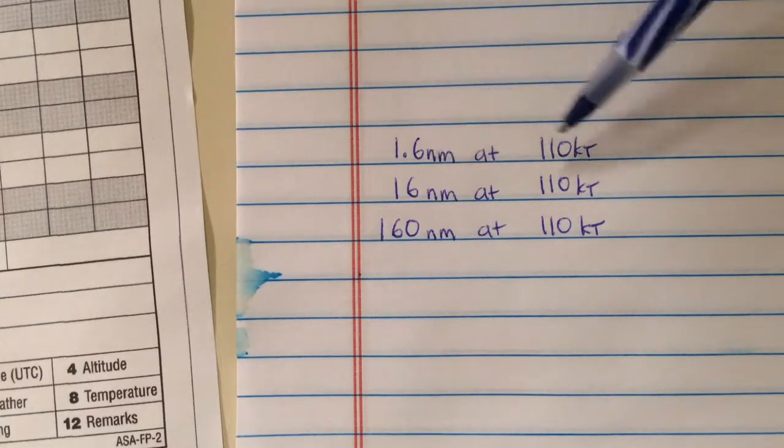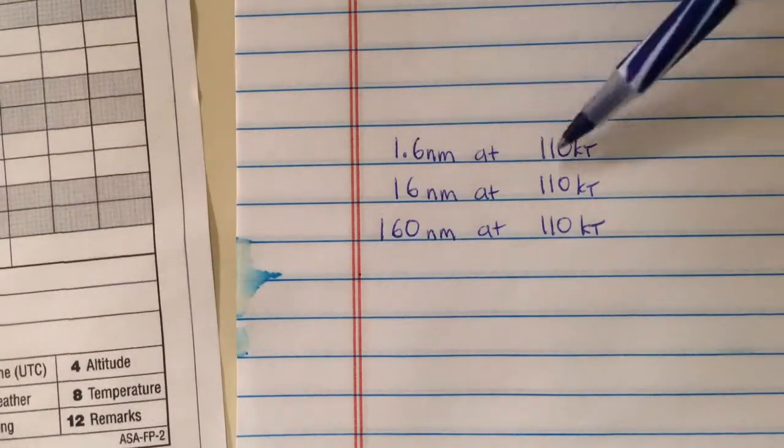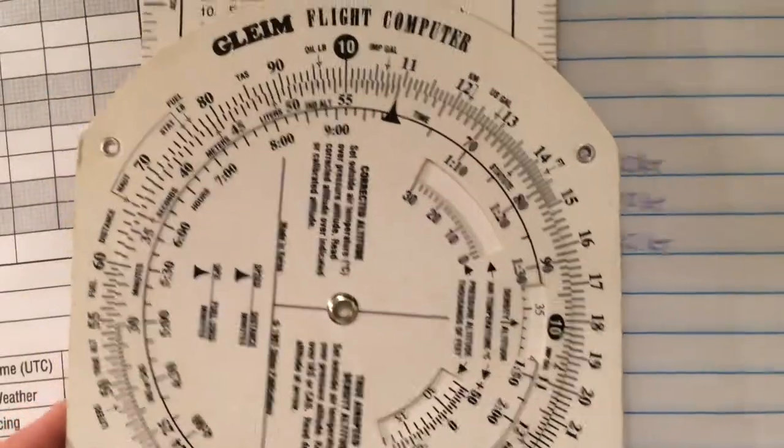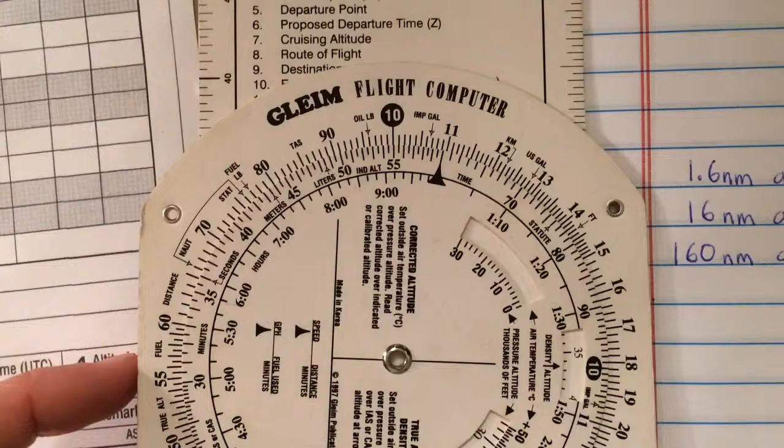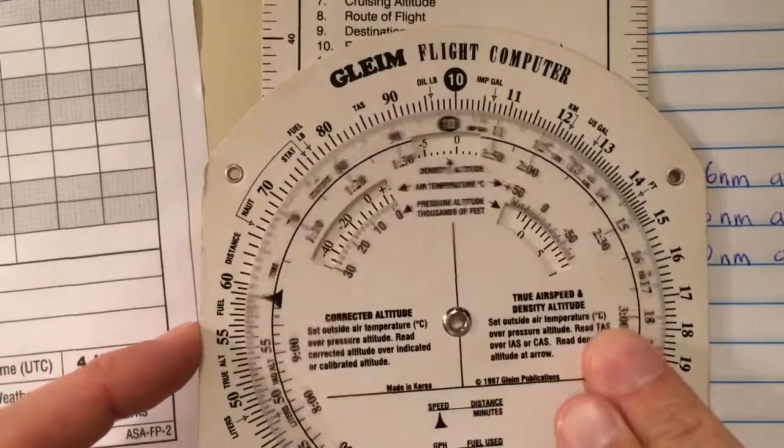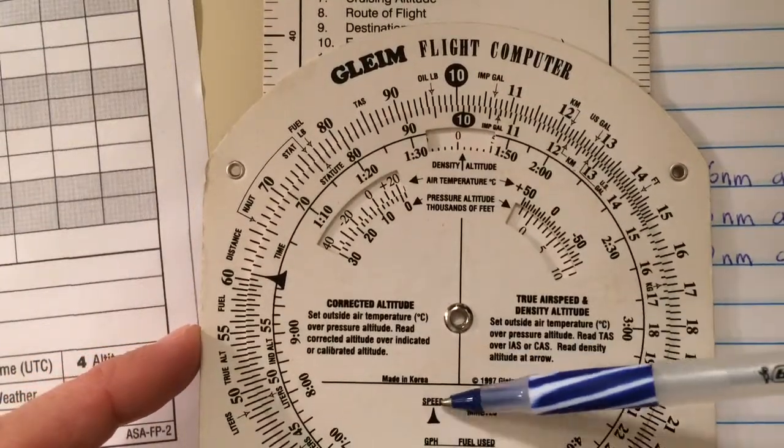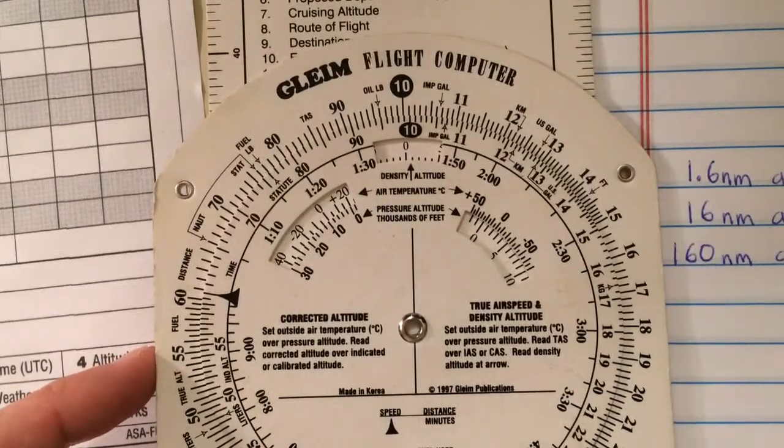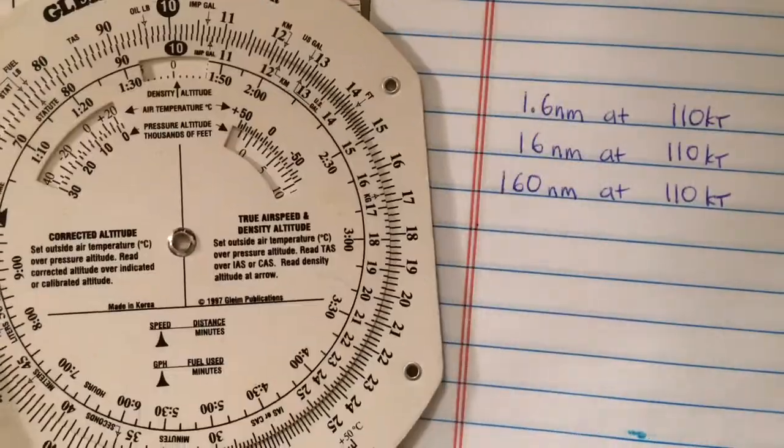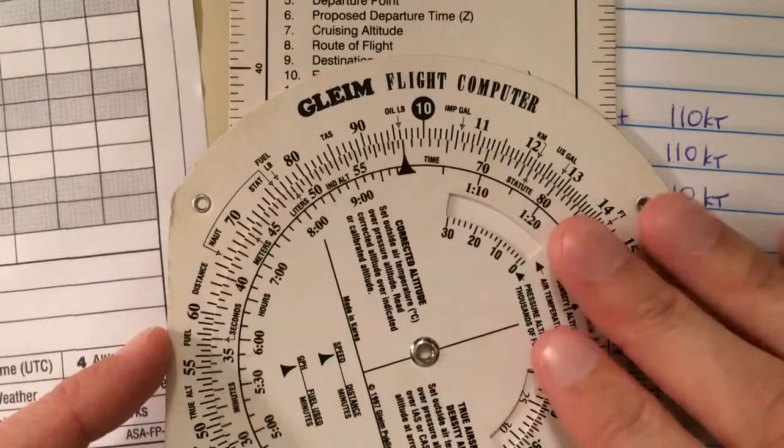Again, nautical miles go with knots. Let's take these three examples and see how to use the different units of the E6B so it makes sense. To compute minutes, we need to set speed and read distance over minutes. Let's set our speed of 110 at the top using the arrow.